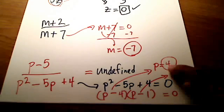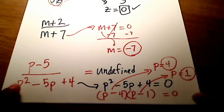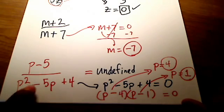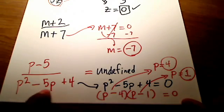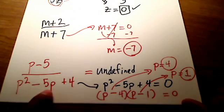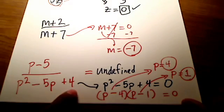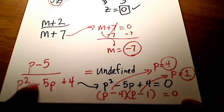Want me to prove it to you? Watch this. Plug in 4 right here. What's 4 squared? 16. What's 16 minus 5 times 4? Let's see, 5 times 4 is 20. So what's 16 minus 20? Hey, that's a negative 4. What's negative 4 plus 4? 0. That would make my denominator a 0.